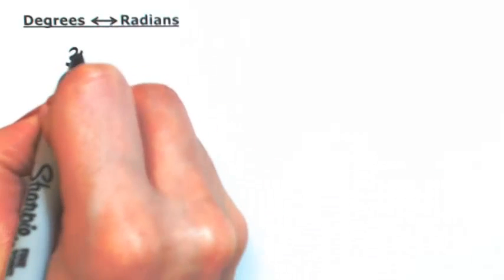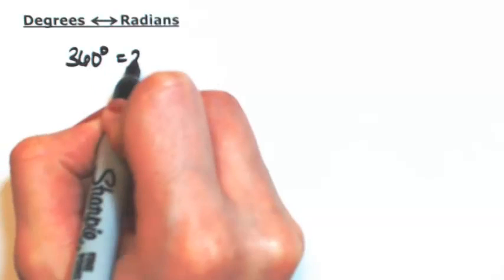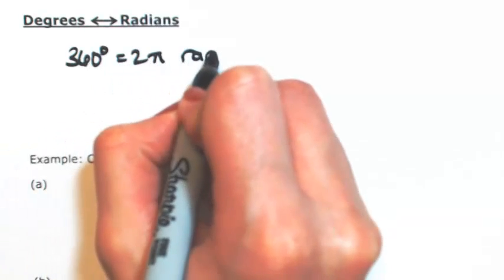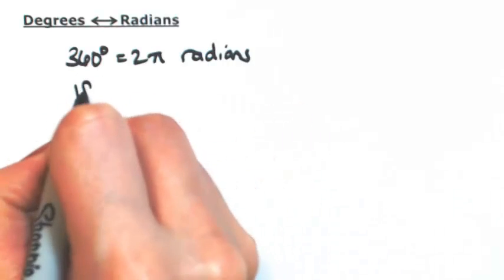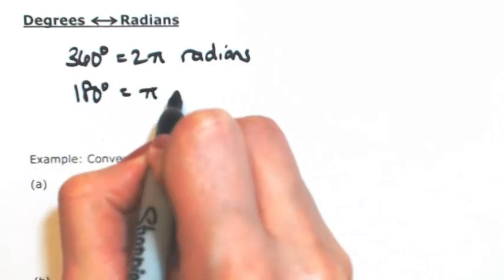We know that 360 degrees equals 2 pi radians. So if I divide both sides by 2, that means 180 degrees is pi radians.